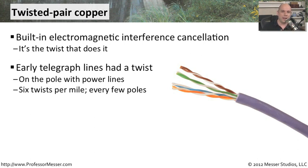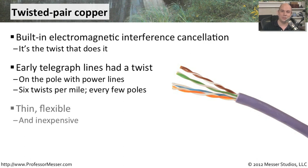What they would do is every few poles, they would separate and twist the wires onto those poles — crossing over every few poles, six twists per mile — and because they were canceling out interference every few poles, they were able to get rid of the interference caused by having power on the same pole. It's the same idea, just miniaturized into the twisted pair cabling we use today.